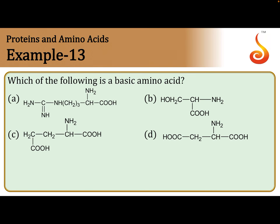Which of the following is a basic amino acid? Amino acids contain 2 functional groups: NH2 and COOH. Based on the number of these 2 groups present in one molecule, we can divide into 3 types of amino acids. If both are equal in number, that is a neutral amino acid.